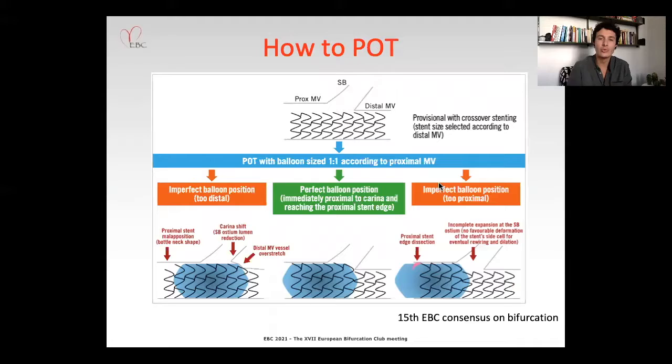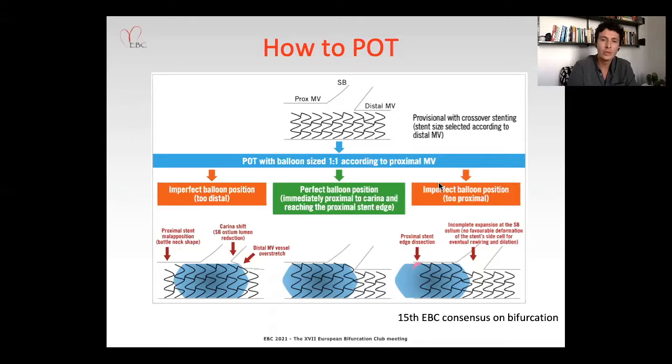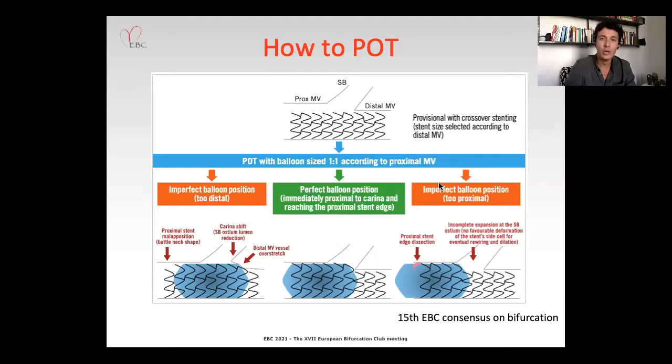Not only is it important to perform POT, but it is important to perform a good POT, correct POT, an adequate POT. The 15th EBC consensus on bifurcations showed us how to perform the correct POT with a short, non-compliant balloon, with the edge of the balloon perfectly positioned immediately proximal to the carina, reaching the proximal stent edge — in order to avoid carina shift if the balloon is too distal, or incomplete expansion towards the side branch ostium if the balloon is too proximal.